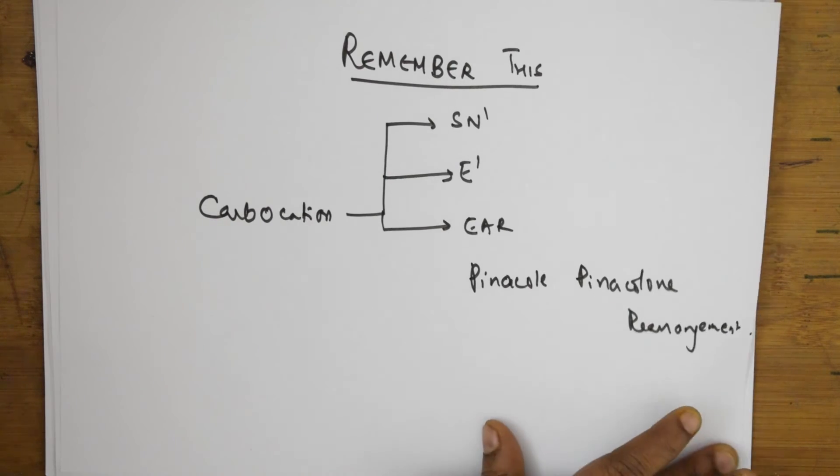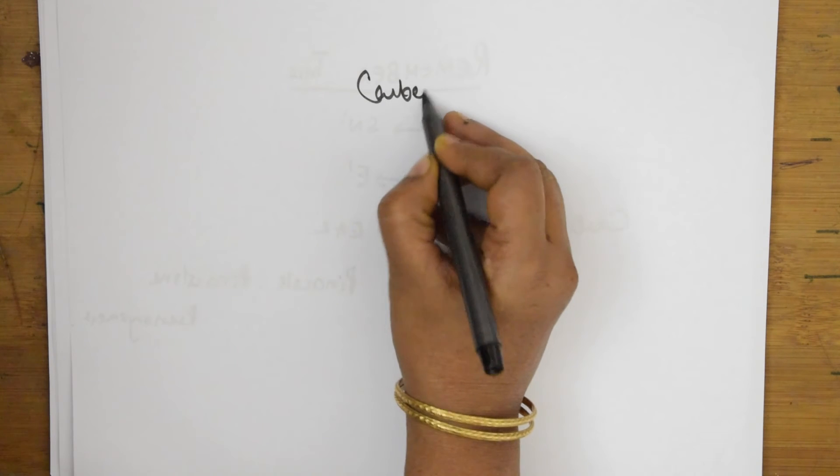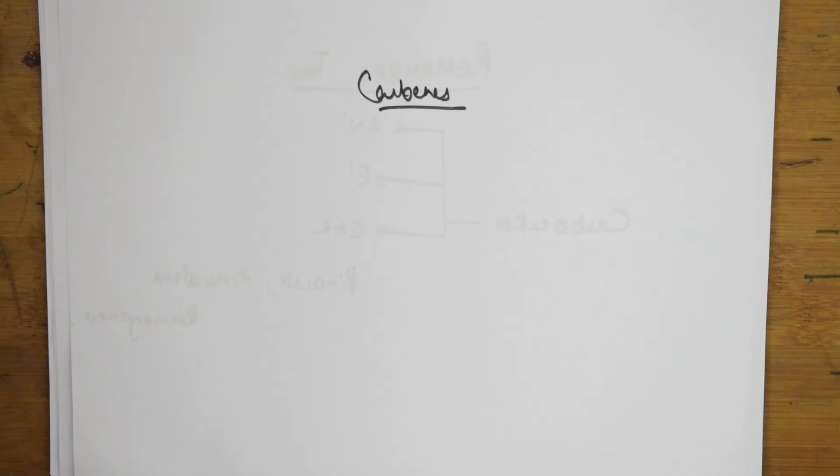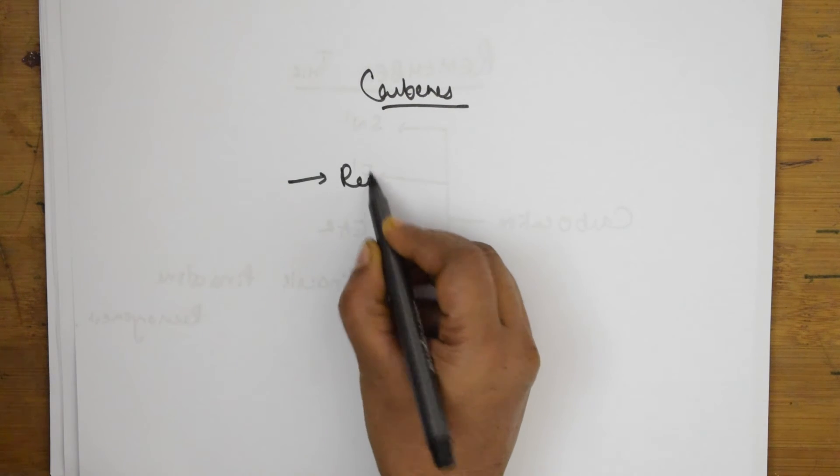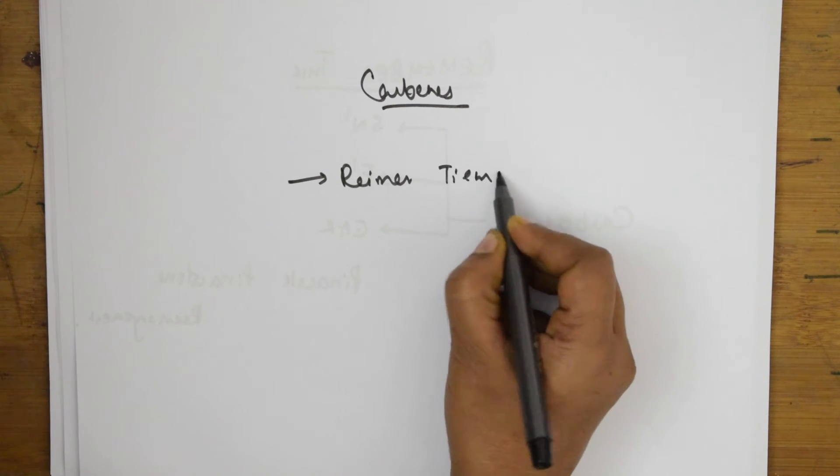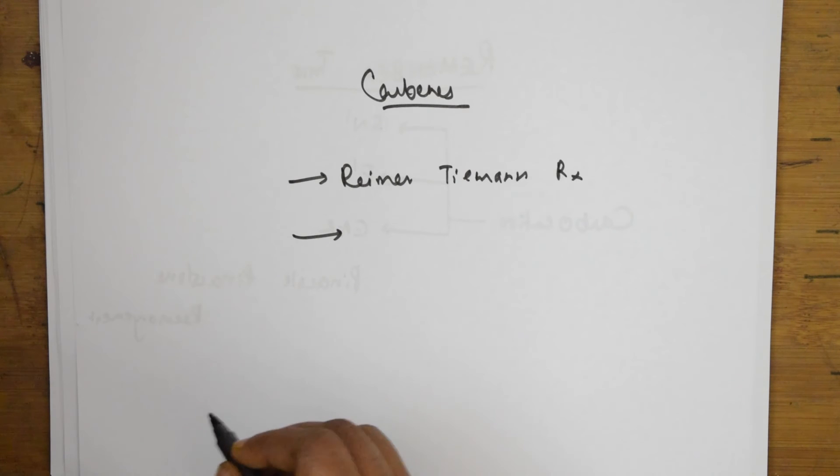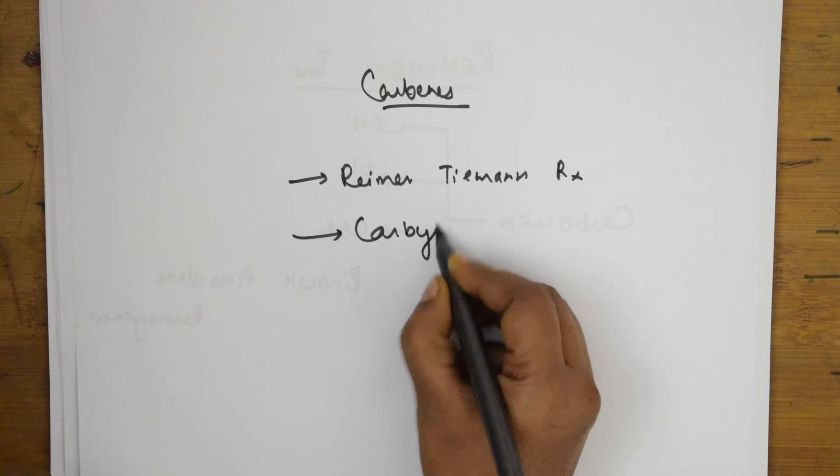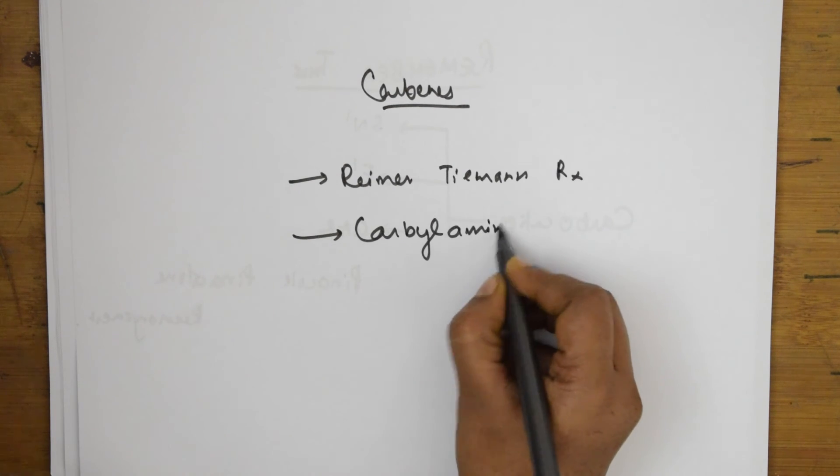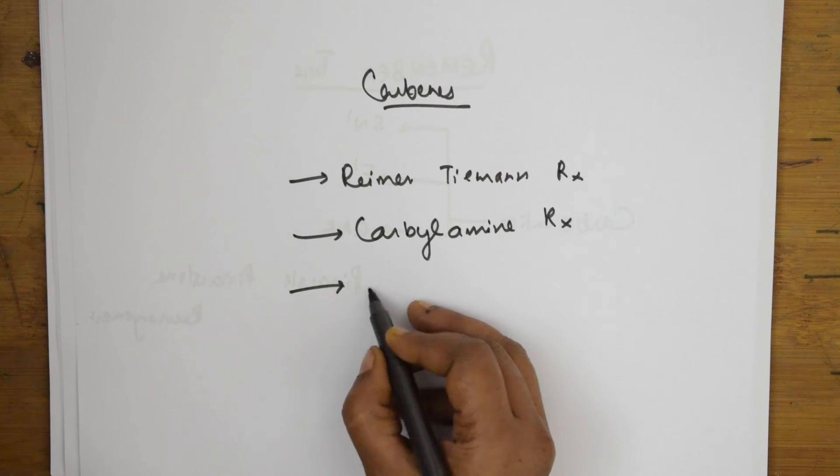If I speak about carbenes, carbenes are basically formed or released as reaction intermediates in Riemann-Tiemann reaction. You have studied this in the aldehyde chapter. It is also formed as a reaction intermediate in carbylamine reaction, which we've seen in the amines chapter.